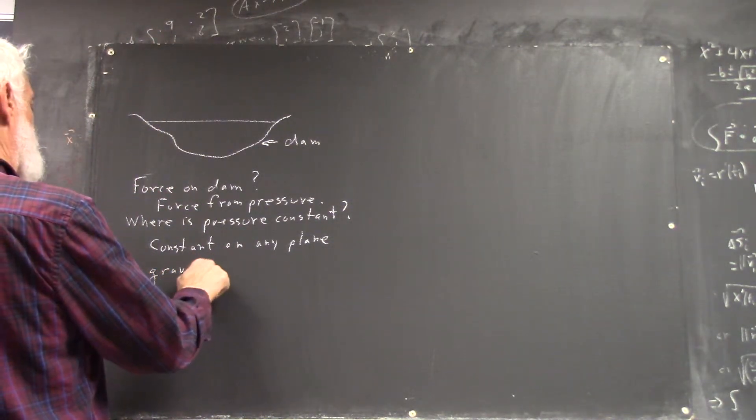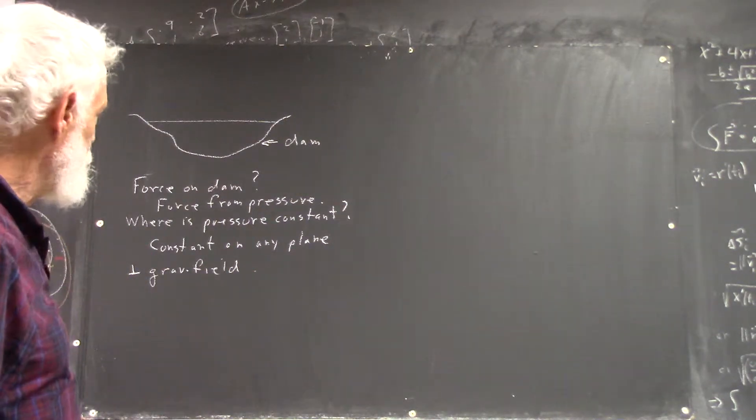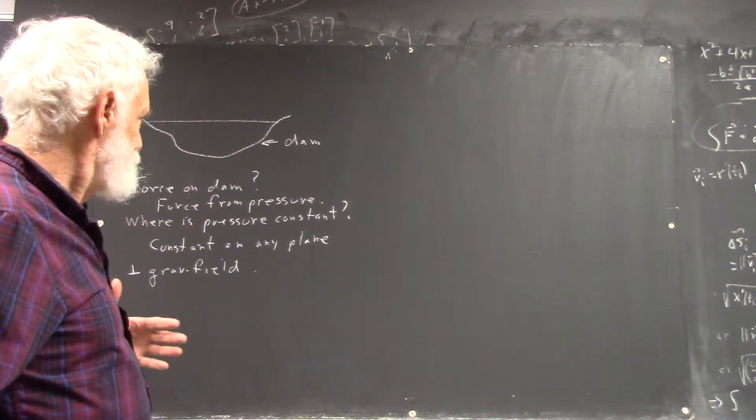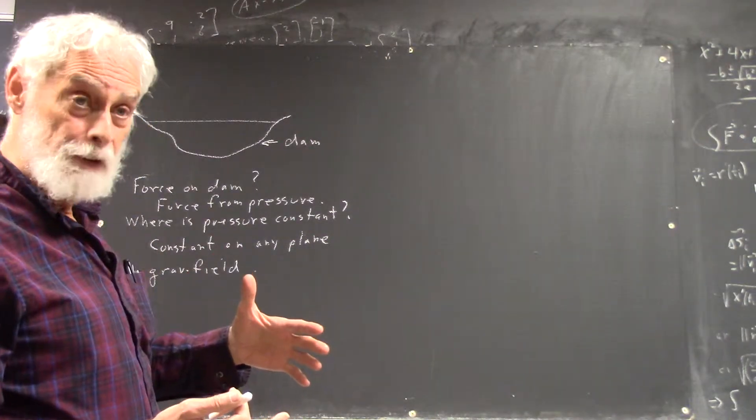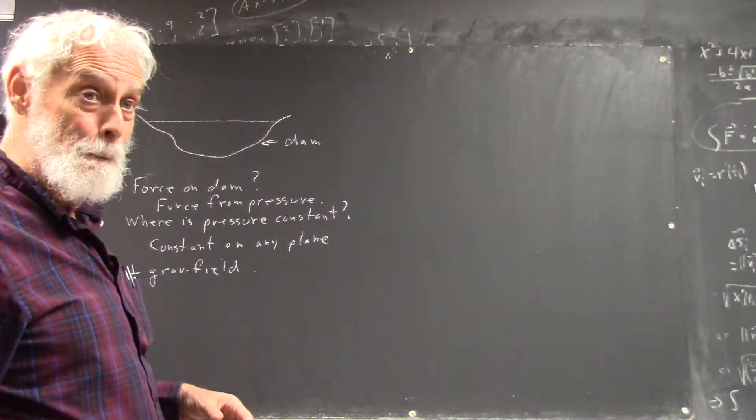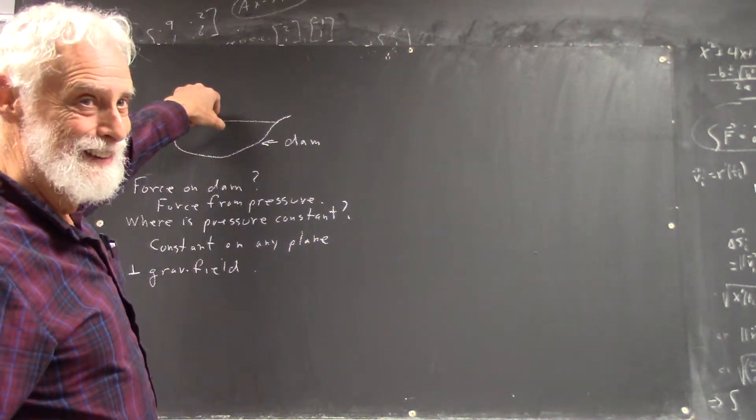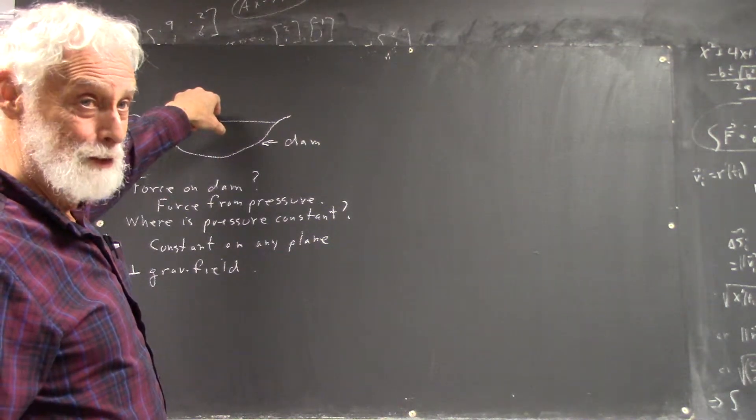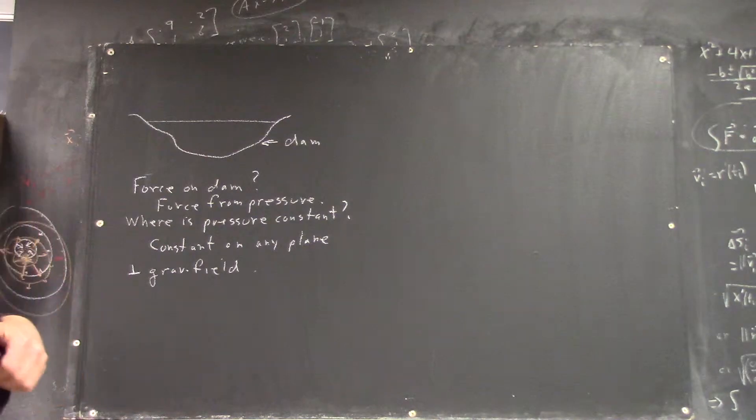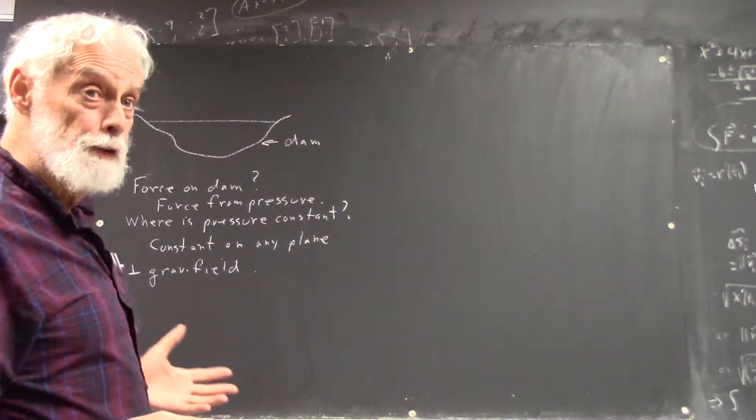Now we're going to assume that we're in a region where the gravitational field is constant. So we assume the dam isn't too high. We don't build dams high enough that that makes a difference. So, in general, it's constant on any equal potential surface.